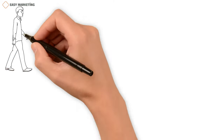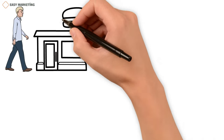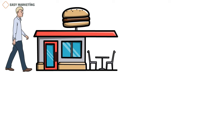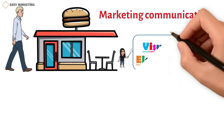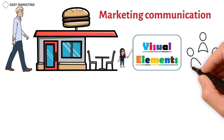Imagine you're walking down the street and you see a sign for a new burger restaurant. The sign is eye-catching, with bold letters and mouth-watering images of burgers. This is an example of marketing communication. The restaurant is using visual elements to communicate with you and grab your attention.